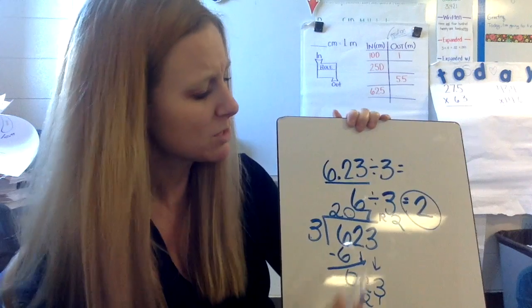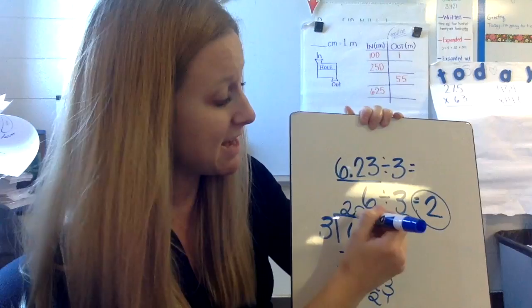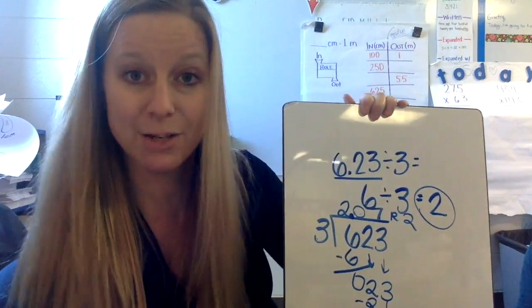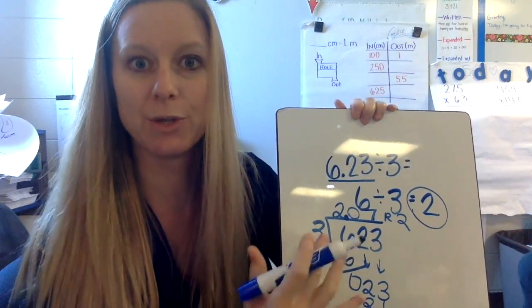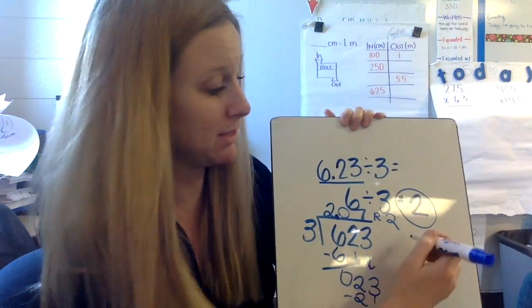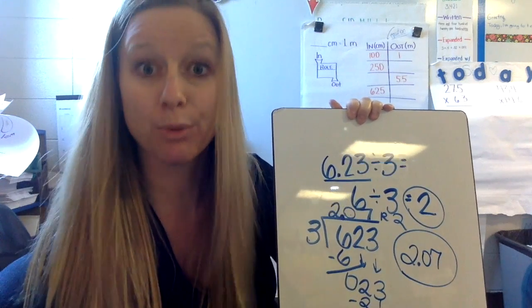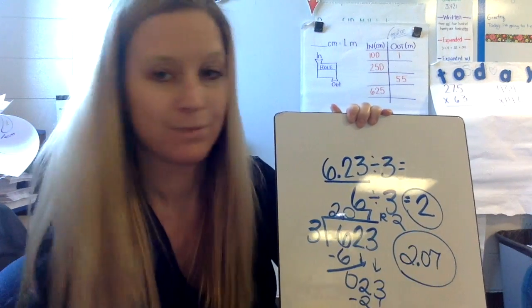So I look at 207 and I say, oh I know if I put that decimal back in between the 2 and the 0, that is really really close to my estimated quotient of 2. So my actual quotient is going to be 2 and 7 hundredths, which is pretty stinking close to 2.